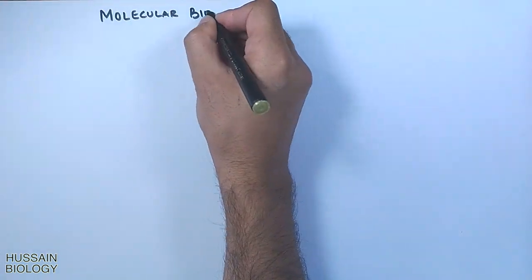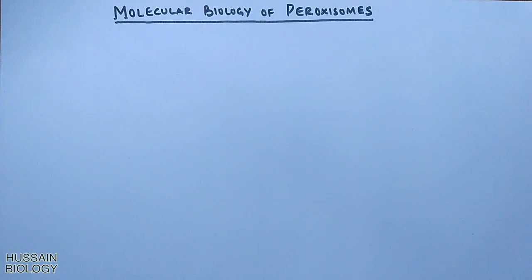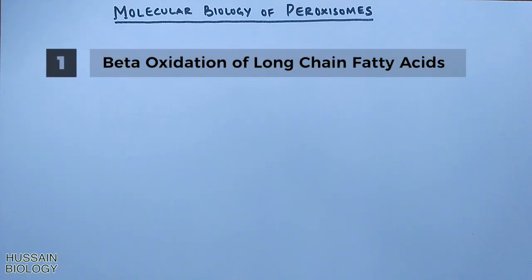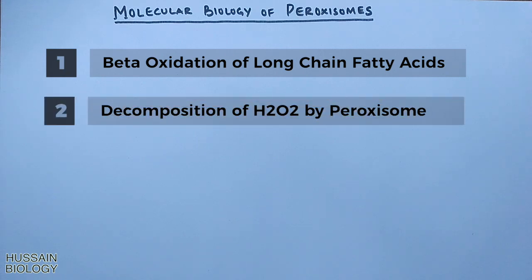In this video we will be discussing the molecular biology of peroxisomes. The major function of the peroxysome is the breakdown of very long chain fatty acids through beta oxidation. The second most important function is the removal of hydrogen atoms from various substrates and transfer them to oxygen, producing hydrogen peroxide as a byproduct — from which the organelle gets its name.